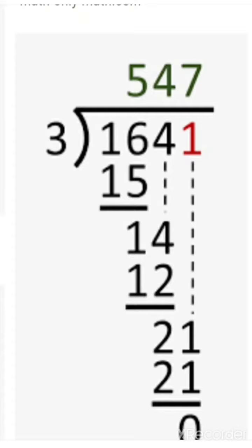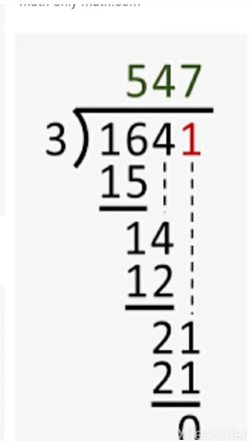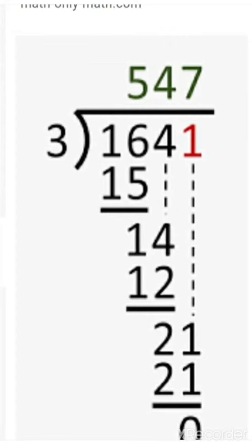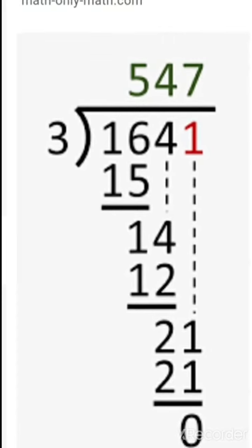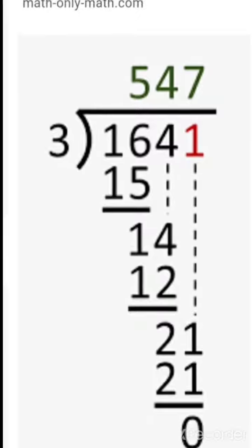And now no number is left to drop down. In this way your division is complete. And here you have got 547 as a quotient. 3 is the divisor here, and 1641 is the dividend, and 0 is the remainder. In this way you will solve division questions.